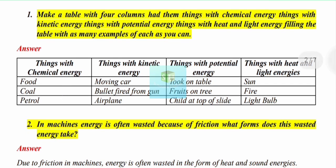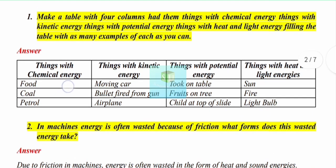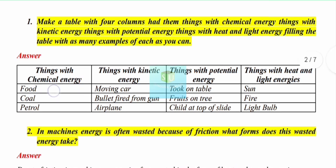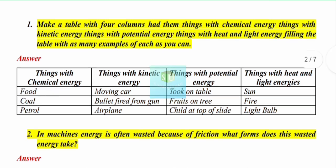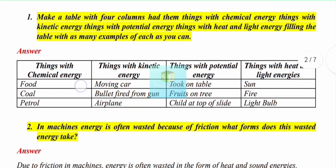For chemical energy, examples include food, coal, and petrol. These don't give you energy directly. Food releases energy through breakdown in the body. Coal and petrol release their stored chemical energy when burned.